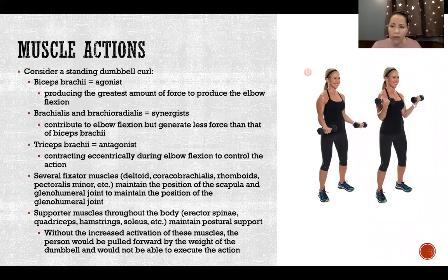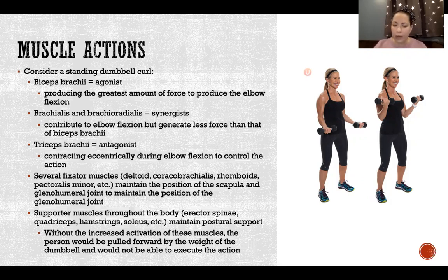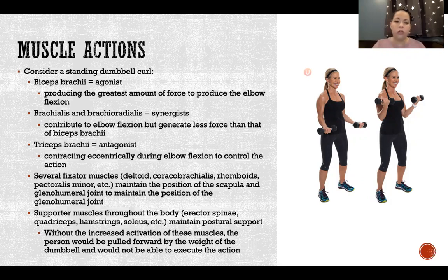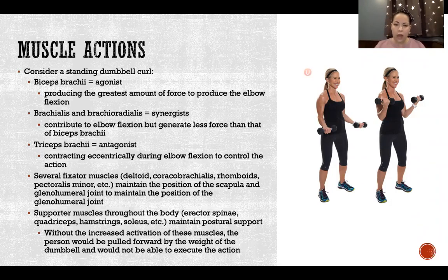Running through the example of a standing dumbbell bicep curl: biceps brachii is the agonist because we're in a supinated position — if we were neutral or pronated, the agonist would change. It's the agonist because it produces the greatest amount of force during elbow flexion. Brachialis and brachioradialis are the synergists — contributing to the action but with less force than biceps brachii because of the forearm position.